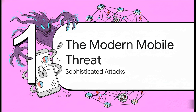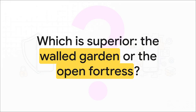Think zero-click exploits — the kind that can compromise a device without the user ever doing a single thing. This really brings us to the central question of our whole analysis: given this advanced threat landscape, which security philosophy actually provides a more robust defense? Is it the tightly controlled, closed-source walled garden that Apple has built with iOS? Or is it the transparent, maximally hardened, open fortress of GrapheneOS?